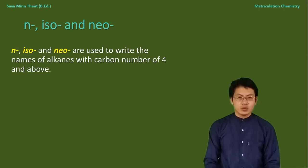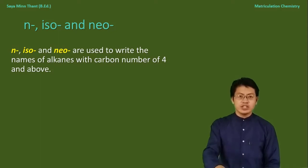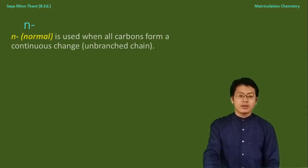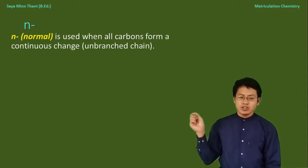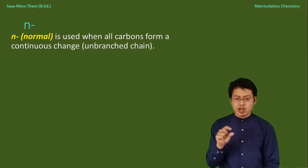Normal is used when all carbons form a continuous chain — an unbranched chain. The prefix 'normal' indicates a straight, continuous carbon chain.